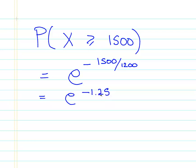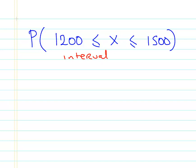And again, it works out the same way as it did the last time with the calculator. Just we should get 0.2865. That's the answer to the second one. And finally, this one's a little bit longer. Here, the probability of lasting between 1,200 hours and 1,500 hours. So what we have here is an interval.